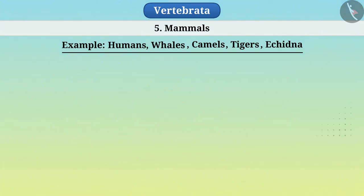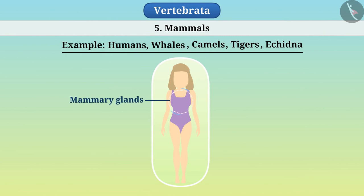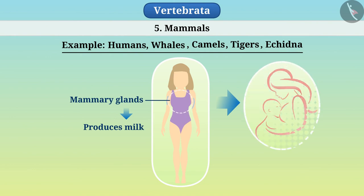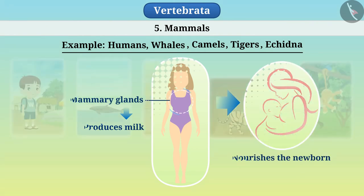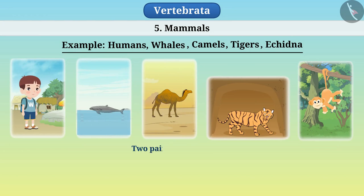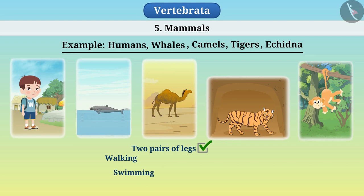Their main feature is the presence of mammary glands in the female body. This gland produces milk which nourishes the newborn. They have two pairs of legs and are adapted for walking, swimming, running, climbing trees, flying, etc.